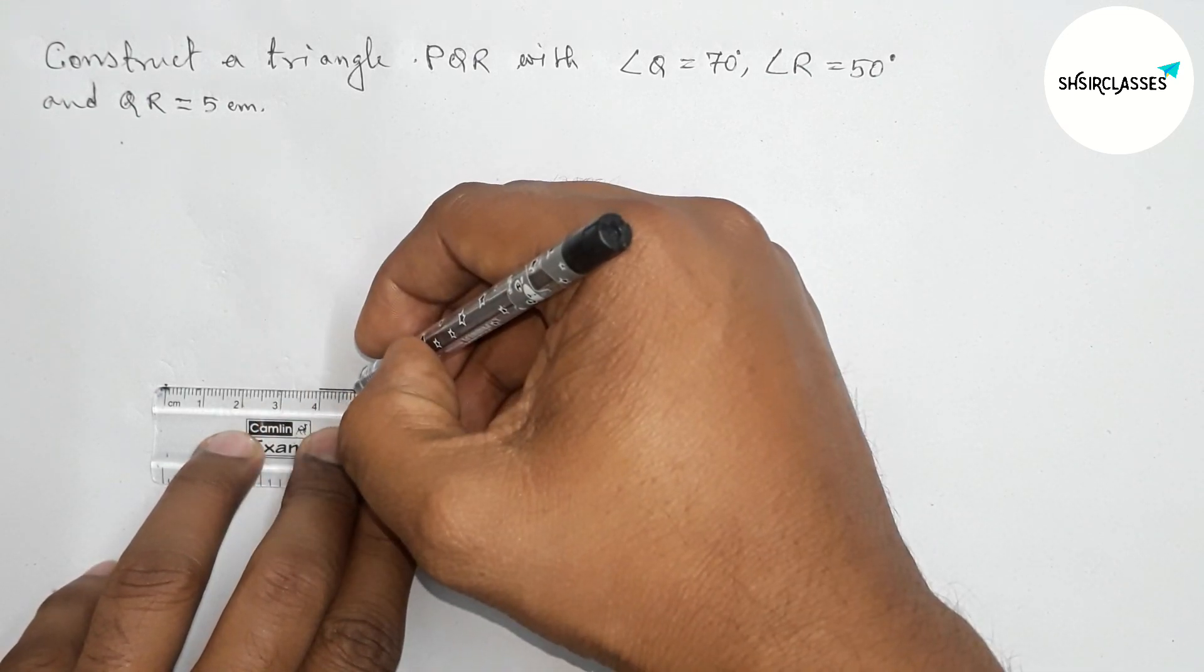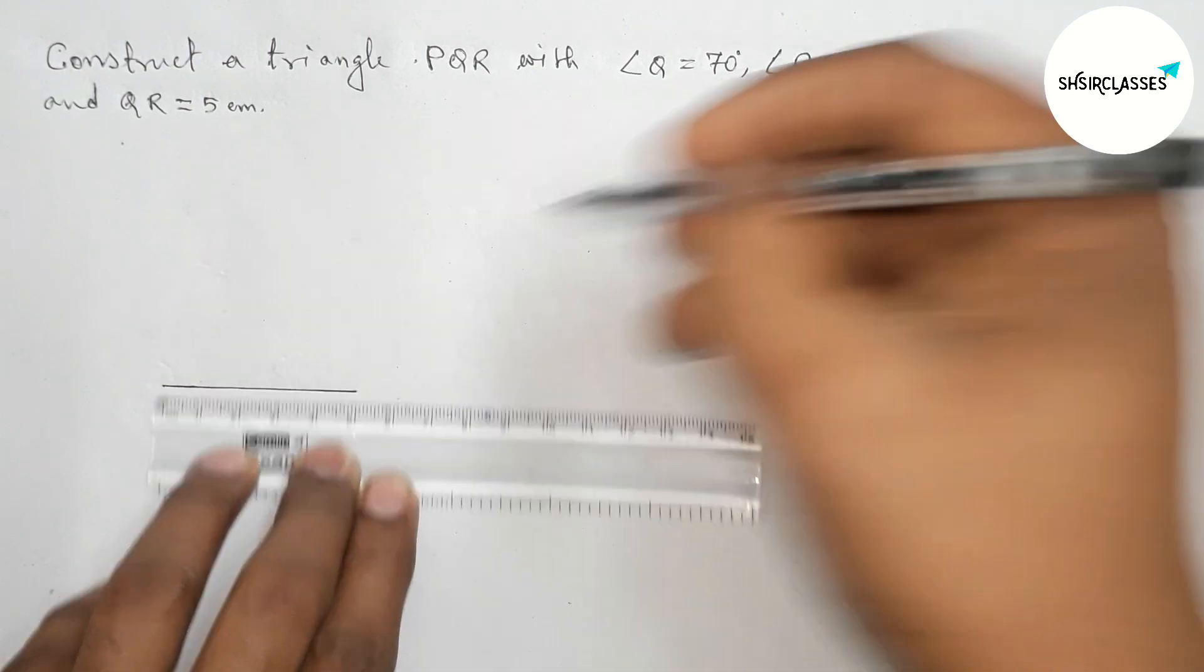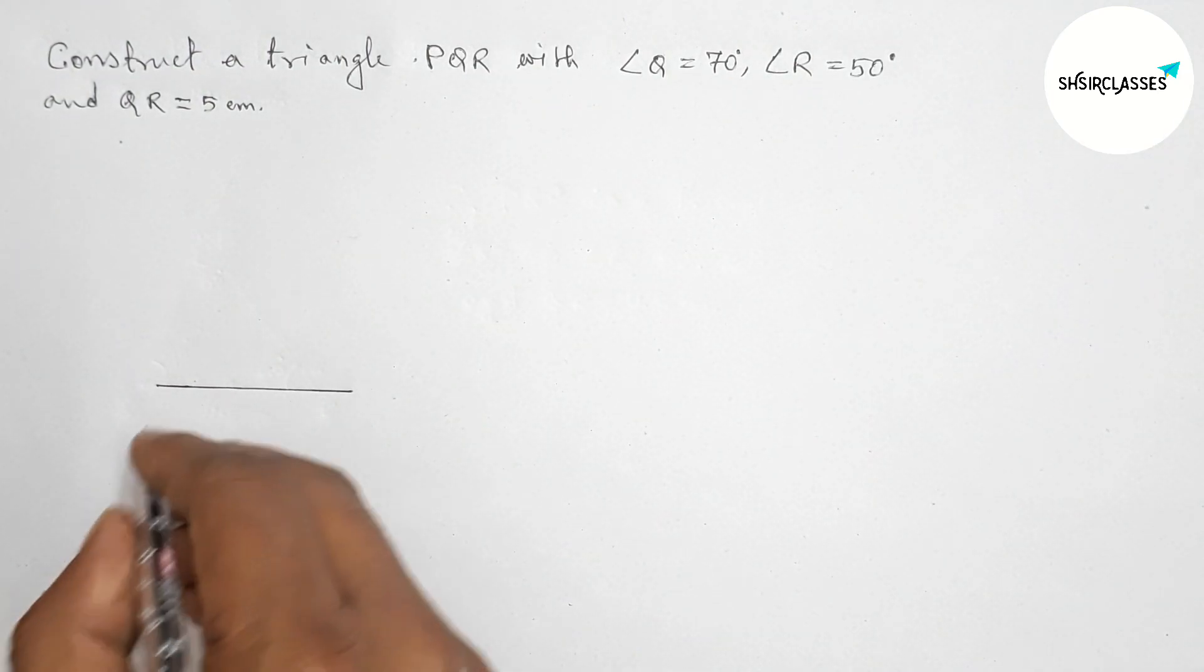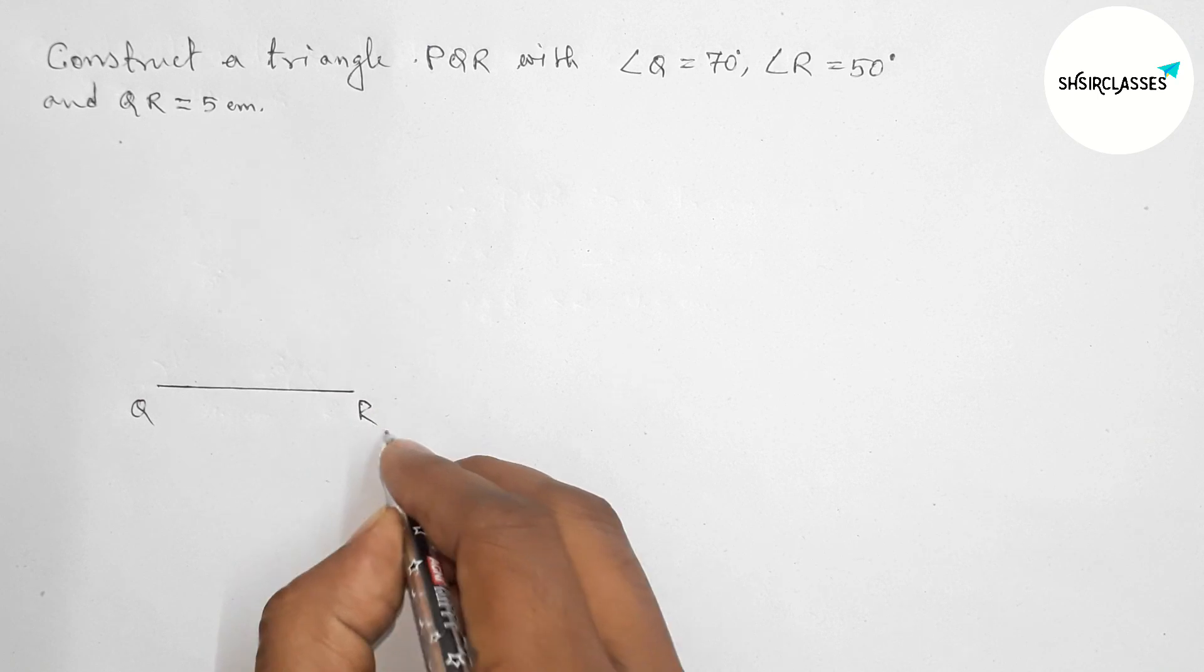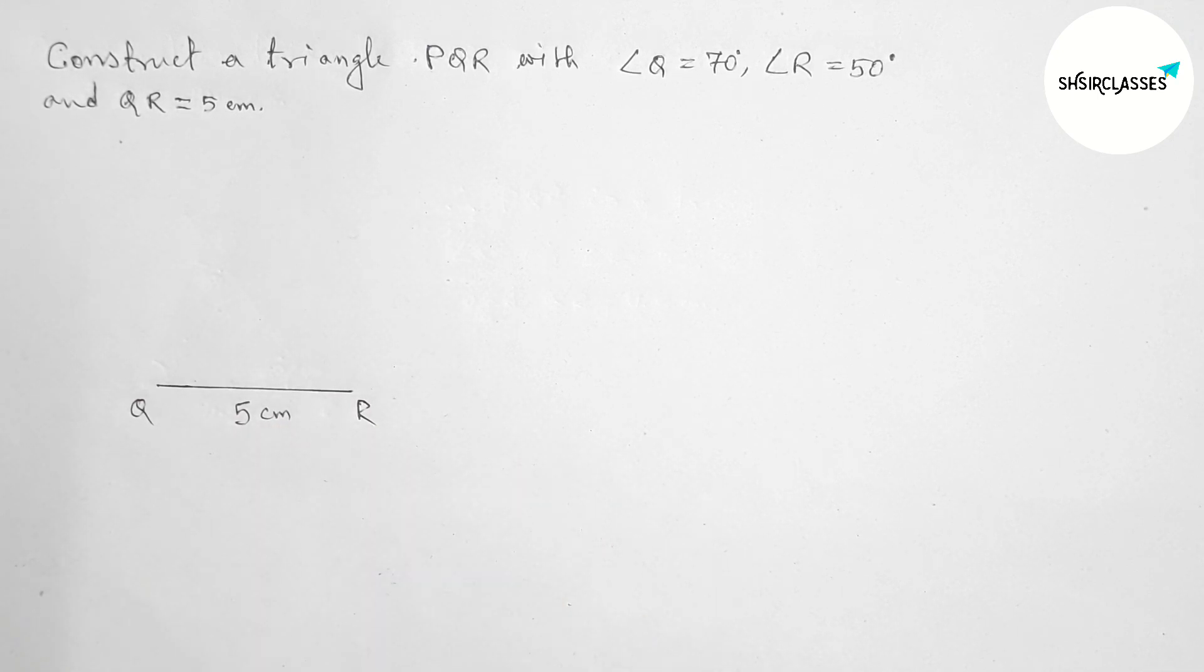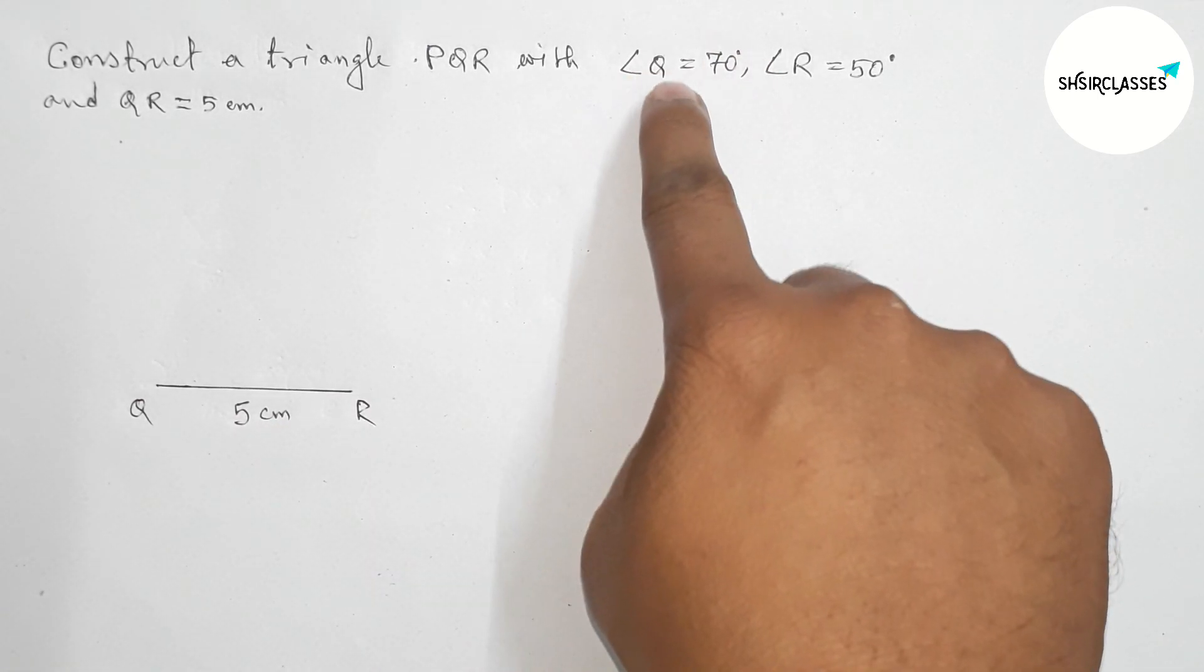This is a 5 centimeter line segment. Now taking points here Q and R, QR equals 5 centimeters. Next, drawing a 70 degree angle.